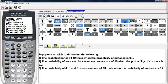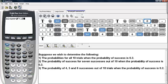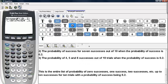We'll go ahead and activate this command, binompdf, type in the number of trials and then the probability of success. Here we have an entire list of probabilities from 0 successes, 1 success, 2 successes, etc., all the way up to 10 successes for the 10 trials with the probability of success being 0.2. This answers the first question.